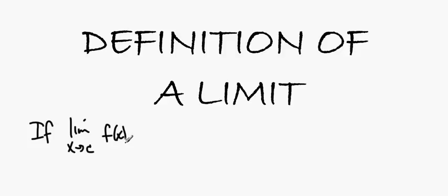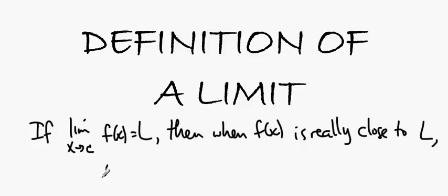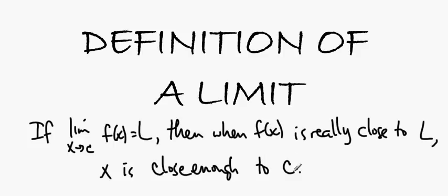In this screencast we get to talk briefly about how to codify the definition of a limit. When we talk about what a limit is, we say: if the limit as x approaches c of f(x) is L, then when x is close enough to c, f(x) is really close to L. If I can get x really close to c, then f(x) is really close to L.